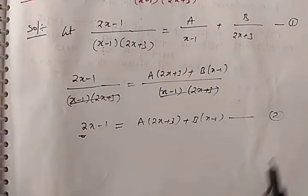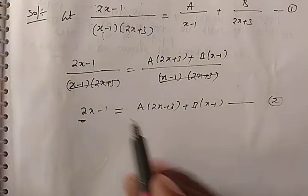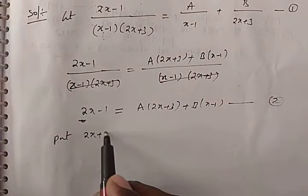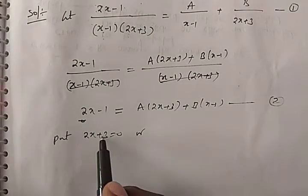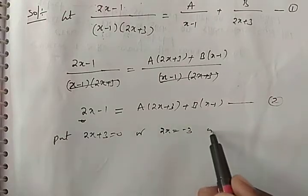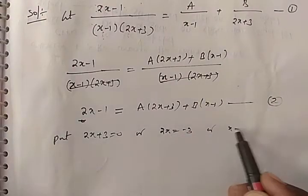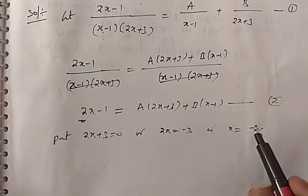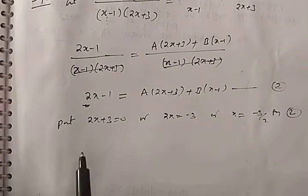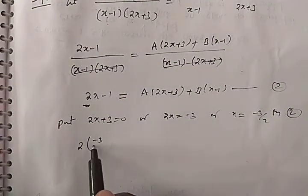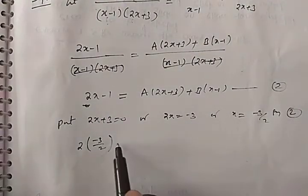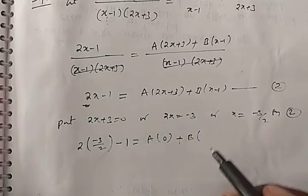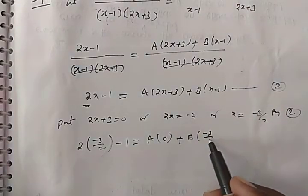Now we have to solve equation 2 for A and B. The best method is the suitable substitution method for Type 1 problems. Put 2x + 3 = 0, which gives 2x = -3, so x = -3/2. Substituting into equation 2: 2x is -3, so 2(-3/2) - 1 = -3 - 1. On the right, A times (2x+3) is 0, plus B times (x - 1), where x = -3/2.